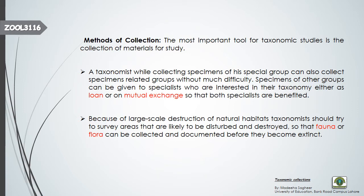There are different methods a taxonomist can adopt. First, when collecting specimens from a particular area, the taxonomist should also collect specimens of related groups. These related specimens can then be given to another specialist working on them, or specimens can be mutually exchanged — he gives you your specimen and you give him his — so both taxonomists benefit.